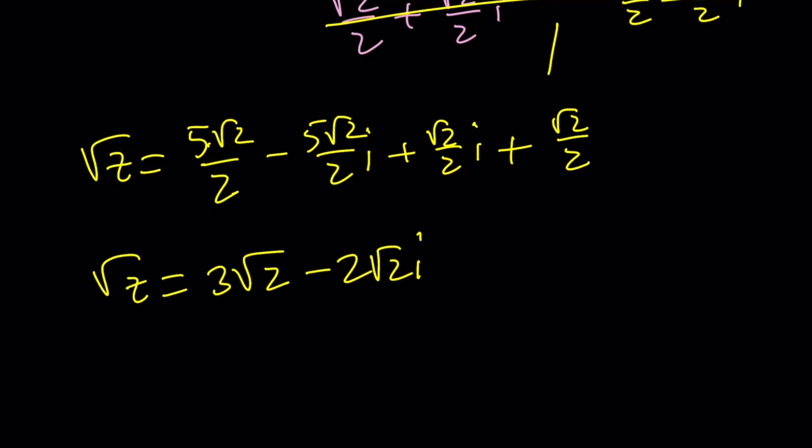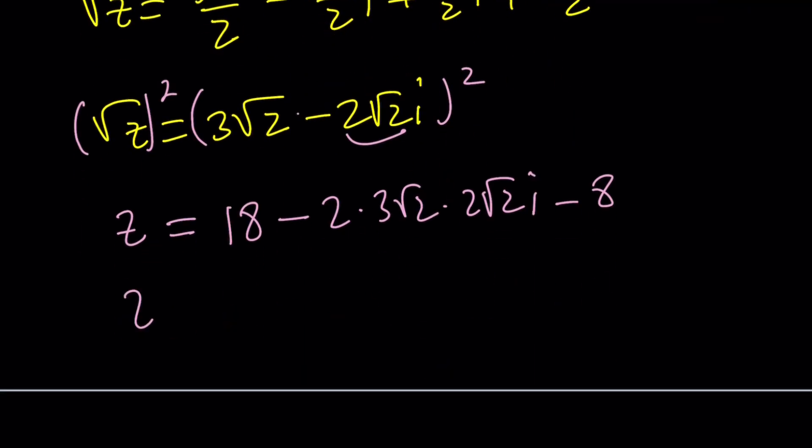How do you find z from here? You are supposed to square both sides. If you square both sides, z is going to be 3 root 2 squared is 9 times 2, which is 18, minus 2 times 3 root 2 times 2 root 2i. And then if you square 2 root 2, you get 8. But that's going to be 8i squared, which is negative 8. 18 minus 8 is 10. And this is root 2 times root 2 is 2, times 2 times 2 is 8, times 3 is 24. You get 10 minus 24i. We got the exact same answer.